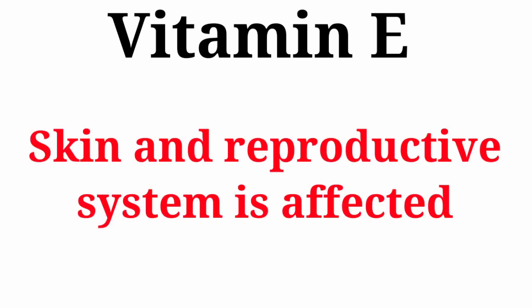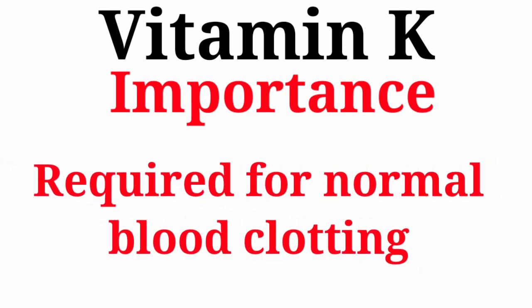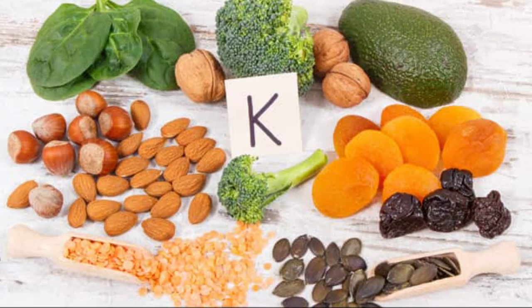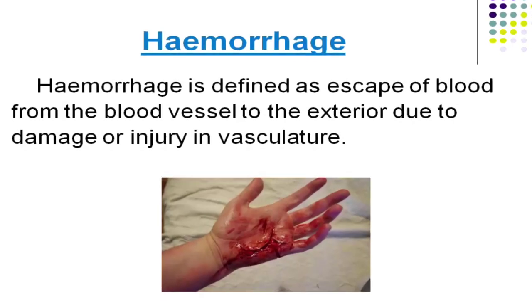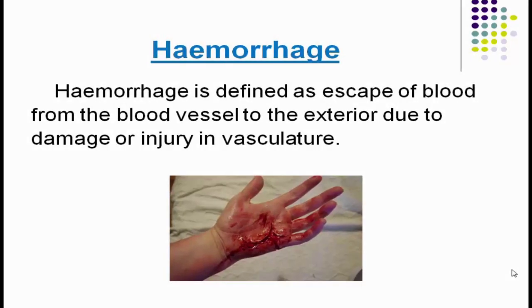The deficiency disease of vitamin E affects the skin and reproductive system. Vitamin K: its function is that it is required for normal blood clotting. The food sources for vitamin K are green leafy vegetables, wheat, cheese, and many more. The deficiency due to lack of vitamin K is hemorrhage.